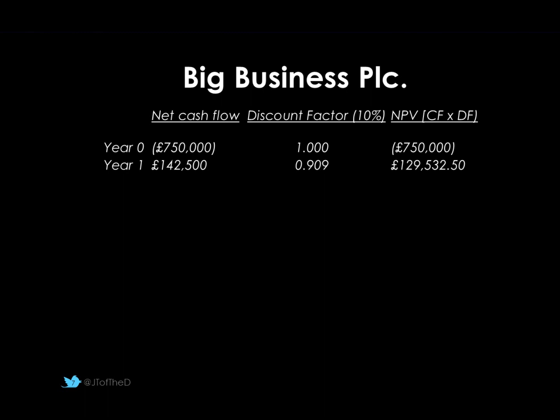At year one, our net cash flow was £142,500. We're going to multiply it by our discount factor, which is 0.909. Make sure you don't round these. So £142,500 times 0.909 gives a net present value of £129,532.50. What that's telling us is that £129,532.50 would be exactly the same if we had that money today as receiving the £142,500 in one year's time. If we take the money and place it in a bank at 10%, the interest we'd earn would mean we'd have £142,500 at the end of one year.